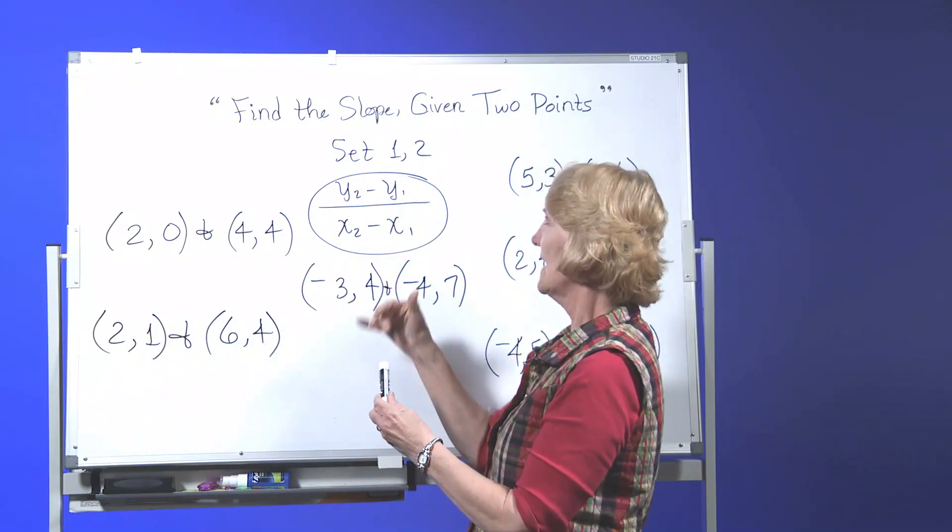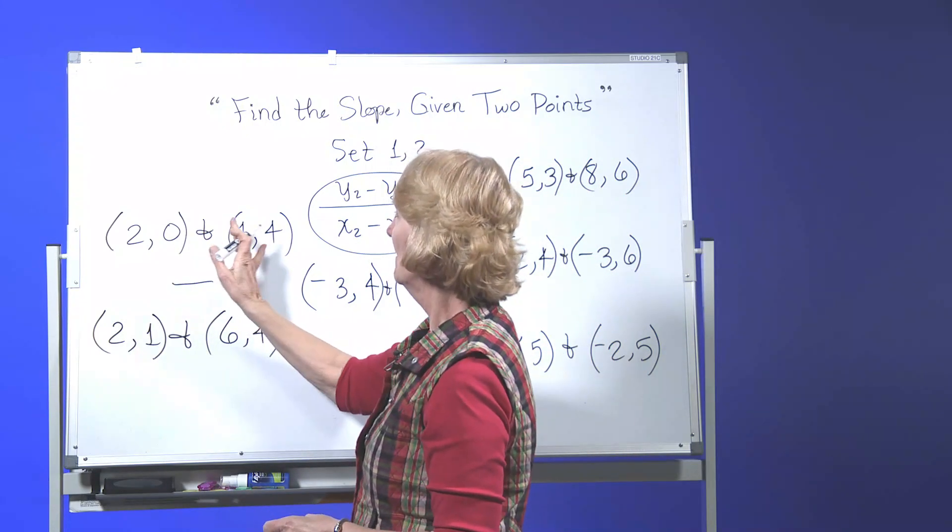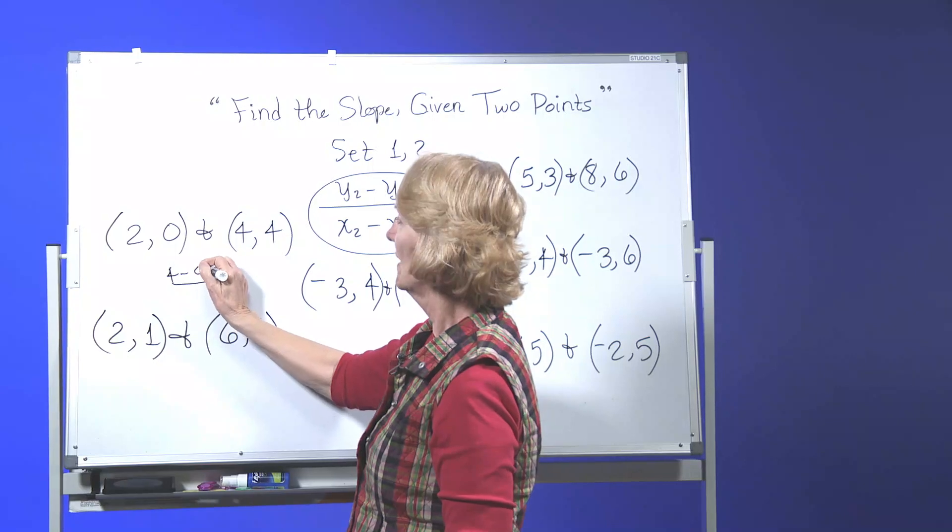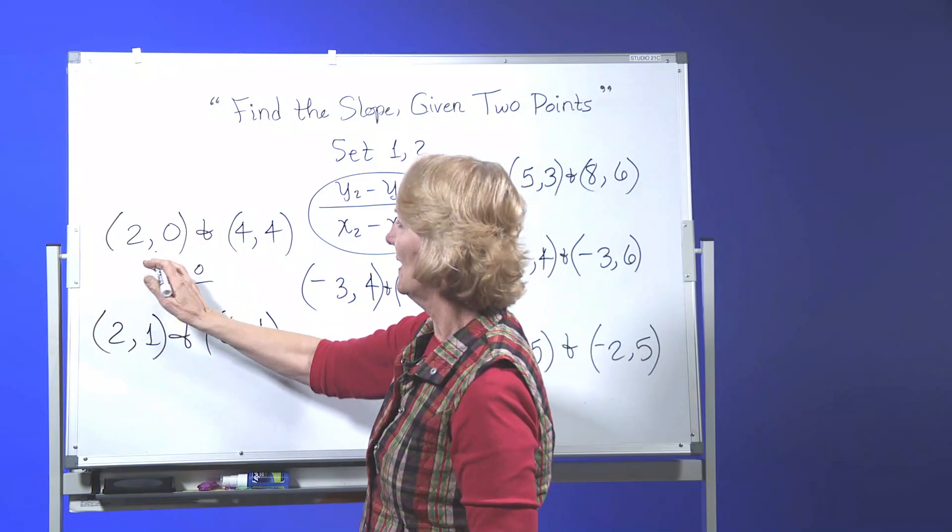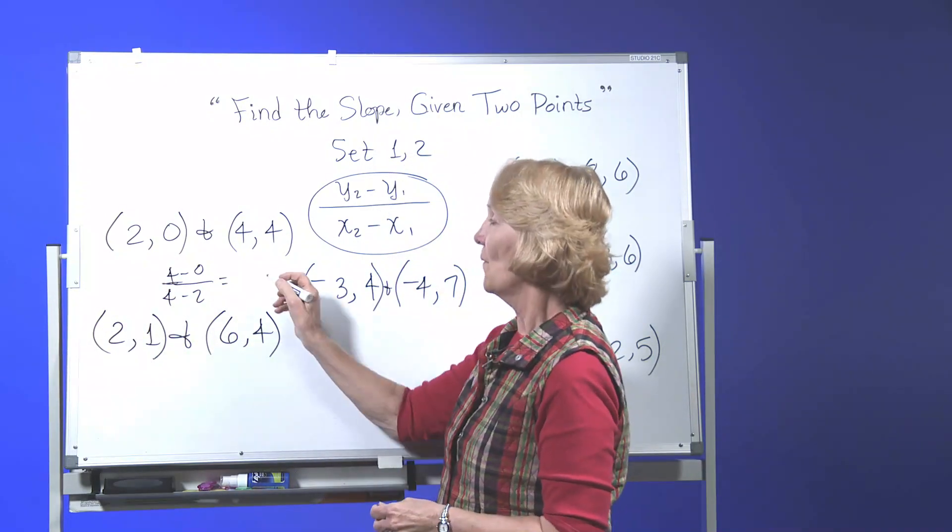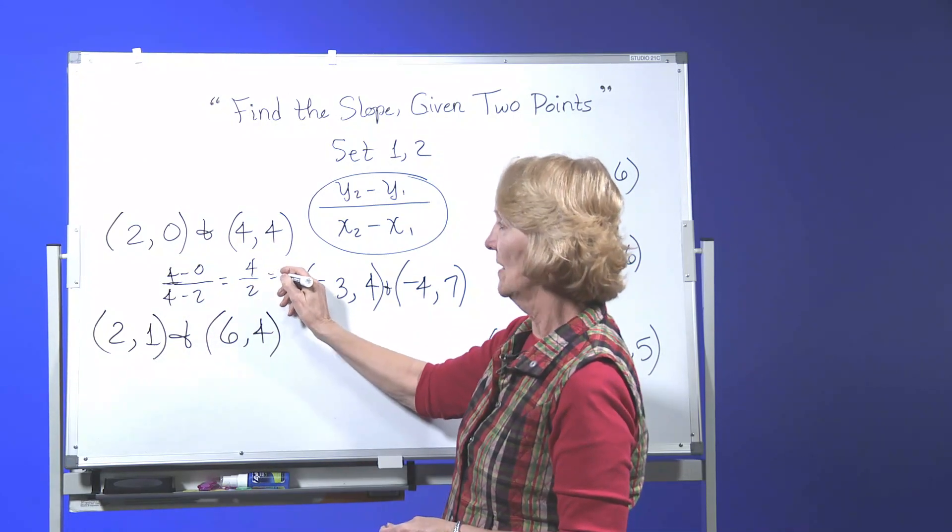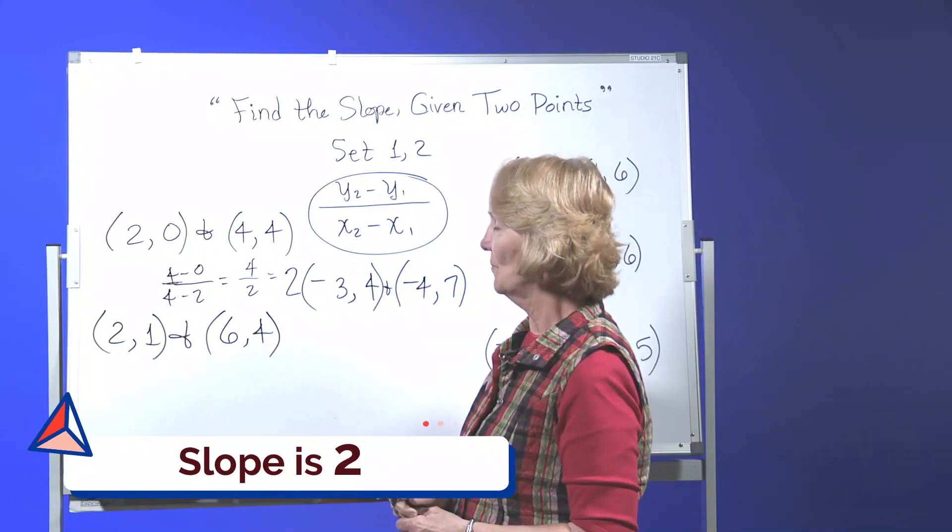So that means we take the second y and subtract the first one. So on this one the second y is 4 minus 0 over our second x minus our first one, so 4 minus 2. And then, let's just do the math. 4 minus 0 is 4, 4 minus 2 is 2. Simplify your fraction so you get slope is 2.